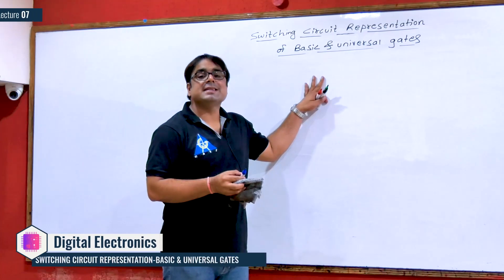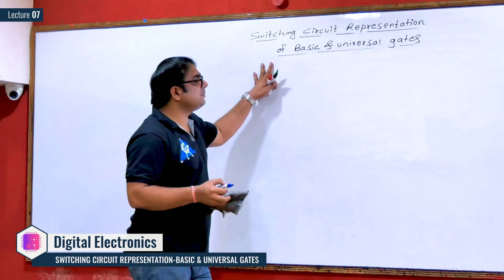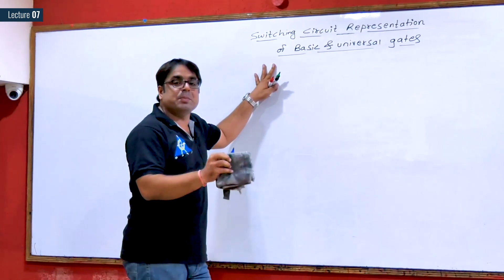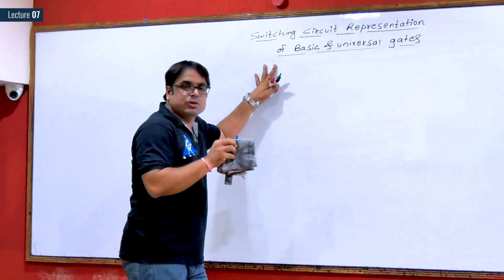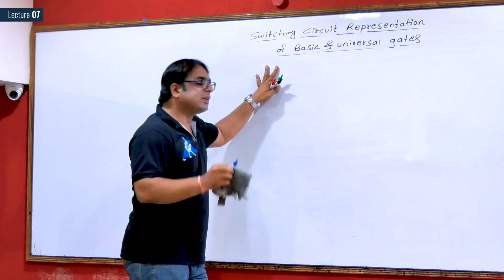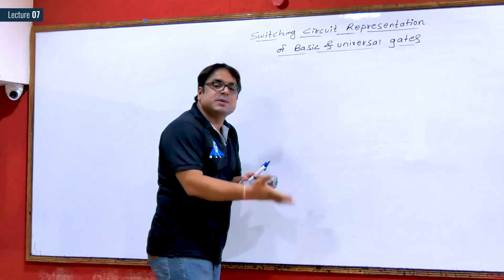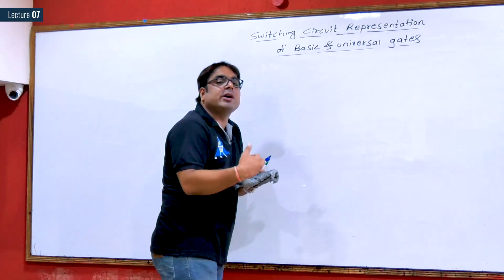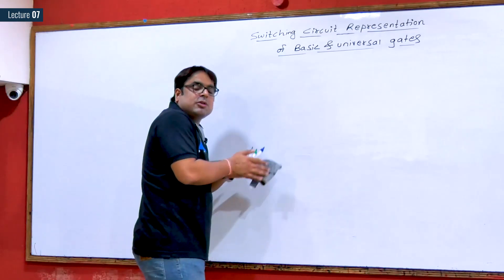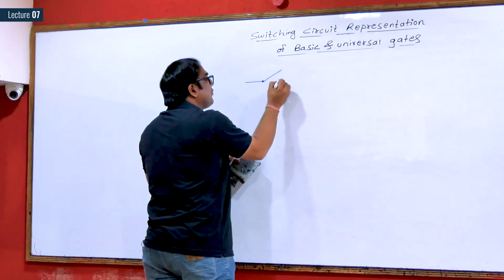We are discussing switching circuit representation of basic and universal gates. A switching circuit is a circuit using switches which must follow the logic of gates — the circuit must resemble a particular gate. Inputs are given in the form of switches and output is observed via a bulb. If the bulb is glowing, logic is high; if not, logic is low. Similarly, if a switch is on, logic is high; if off, logic is low.